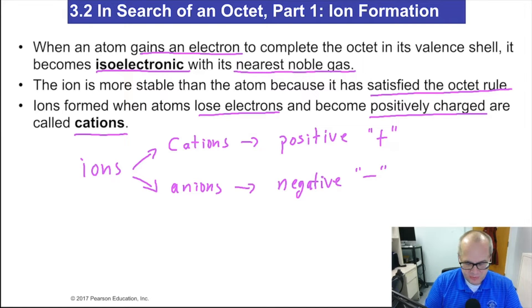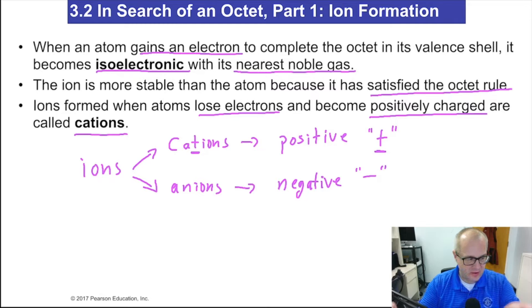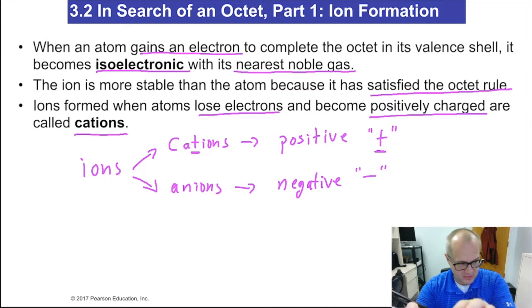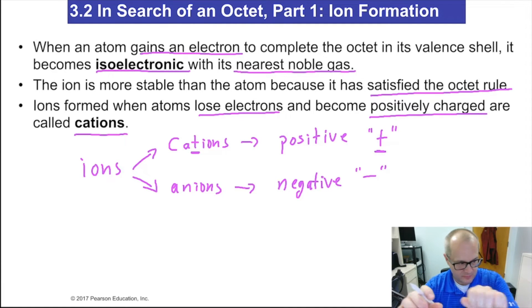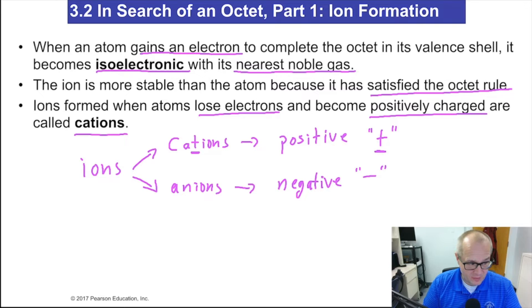Now, how do people remember this? Notice how in the word cation there is a T, and the positive charge symbol kind of resembles a T. Another way is to think of a cation: cats have paws, so cations are positive. That's pretty clever. So that's how people remember it.